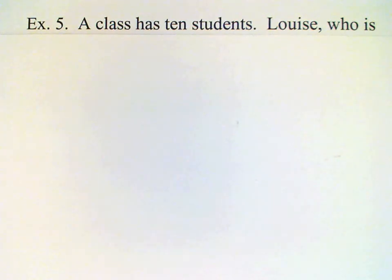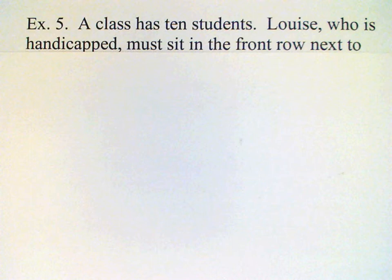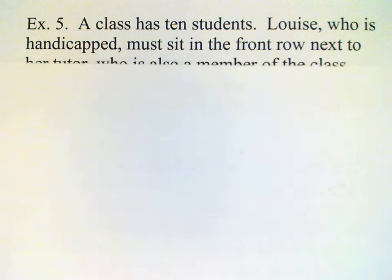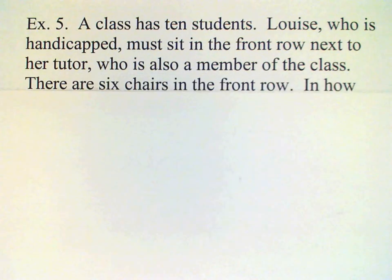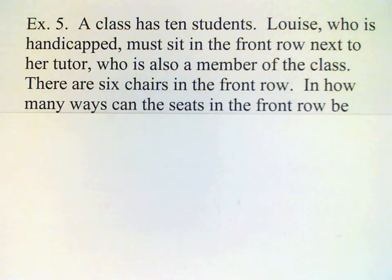Let's do one more counting problem with a restriction in it. A class has 10 students. Louise, who is handicapped, must sit in the front row next to her tutor, who is also a member of the class. If the front row has 6 seats in it, how many different ways can the seats in the front row be assigned?